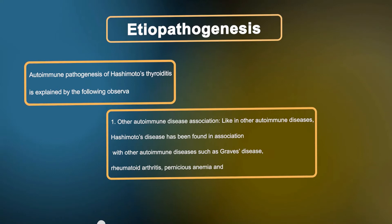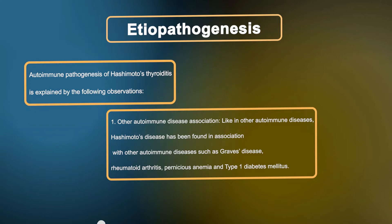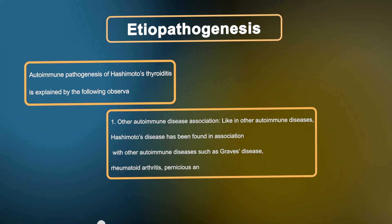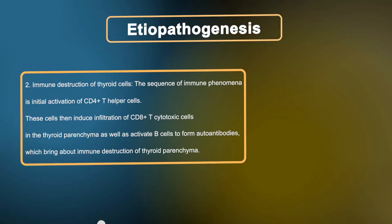The autoimmune pathogenesis of Hashimoto's thyroiditis is explained by the following observations. First, other autoimmune disease association: like in other autoimmune diseases, Hashimoto's disease has been found in association with other autoimmune diseases such as Graves disease, rheumatoid arthritis, pernicious anemia, and type 1 diabetes.